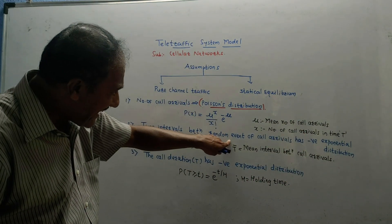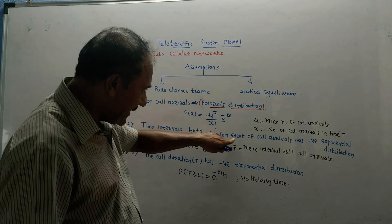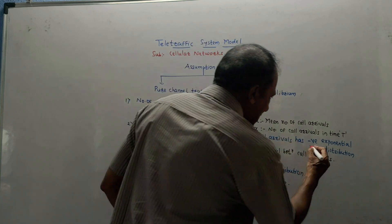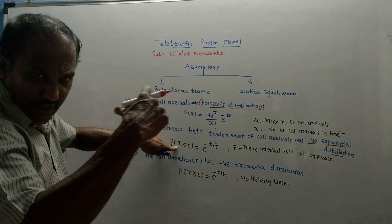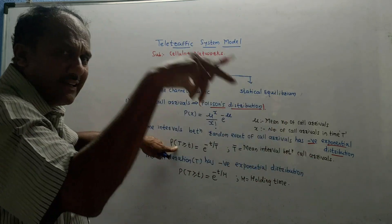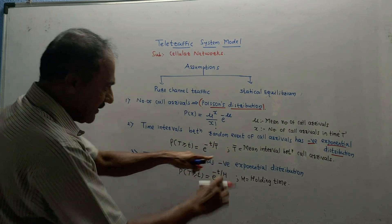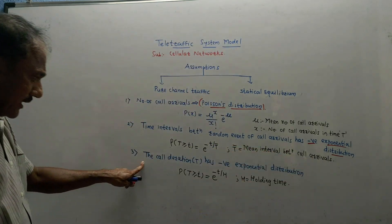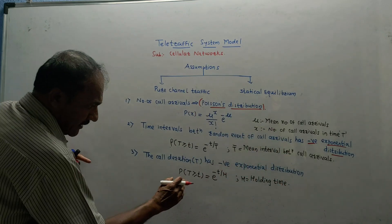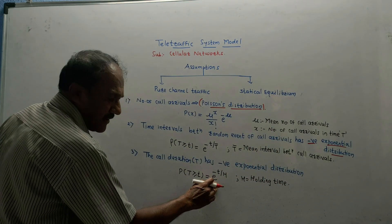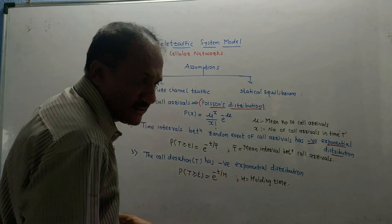Second: the time intervals between random events — since call arrivals are random events — have a negative exponential distribution. The formula is: probability that capital T is greater than or equal to small t equals e raised to minus T divided by capital T-bar, where capital T-bar is the mean interval between call arrivals. Third: the call duration T also has a negative exponential distribution. Probability of T greater than or equal to t equals e raised to minus T divided by H, where capital H is the holding time.